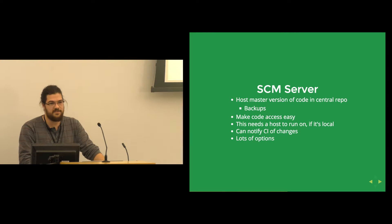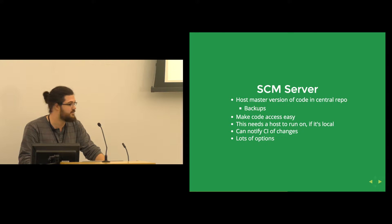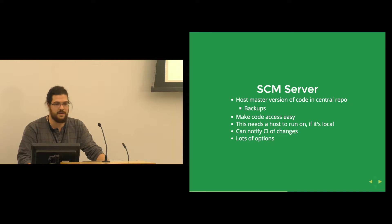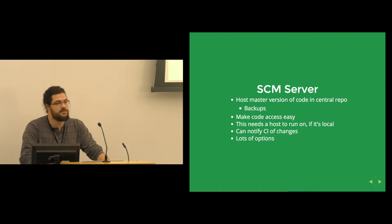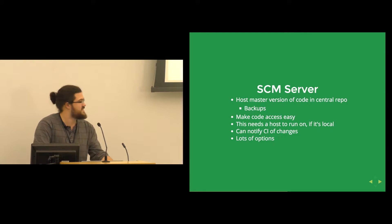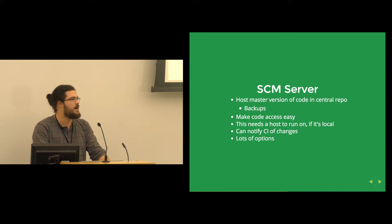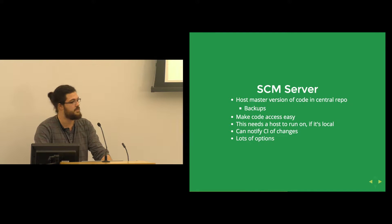For your source control server, you'll need somewhere to put your central repository. You probably want to make backups — you don't want some random fire or cosmic ray bit flip to lose you a million dollars worth of code. You need your code easy to access so a developer can pull it down without spending a lot of time. If you're keeping it internal, you'll need somewhere to run it — a server, a Docker container, wherever. It also needs to be able to notify your CI system when there are changes. There are a ton of options: we currently use Stash, which is now called Bitbucket Server; there's also GitLab, GitHub with private repos, and others.